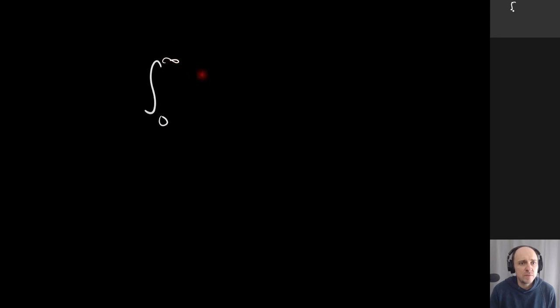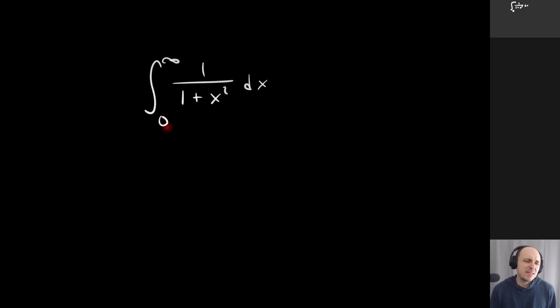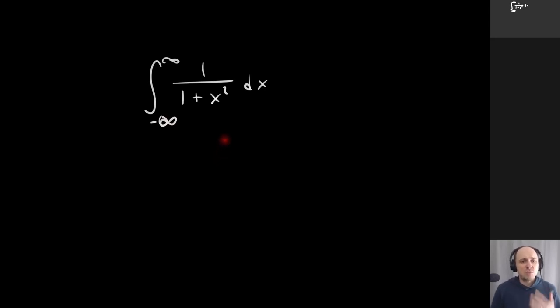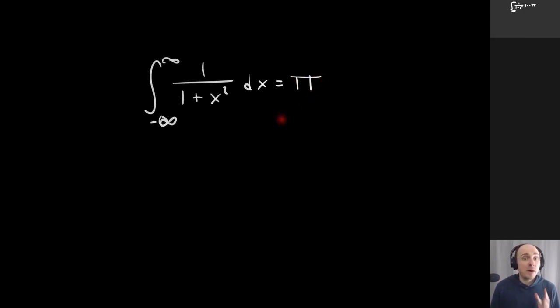Here's a classic integral from calculus. It's the integral from zero to infinity of 1/(1+x²) dx. Sometimes people phrase this as minus infinity to infinity — the integral of 1/(1+x²) dx where x goes from minus infinity to infinity. Somewhat surprisingly, the answer ends up being π. The value of this integral is π.